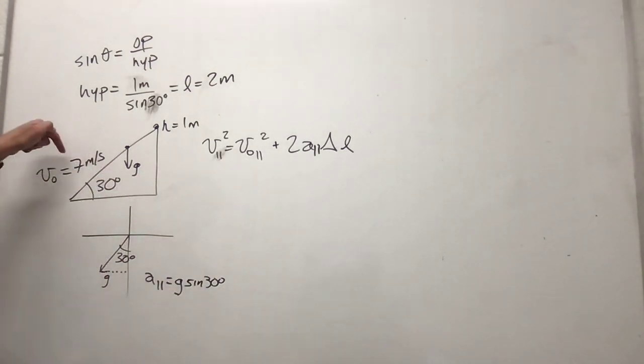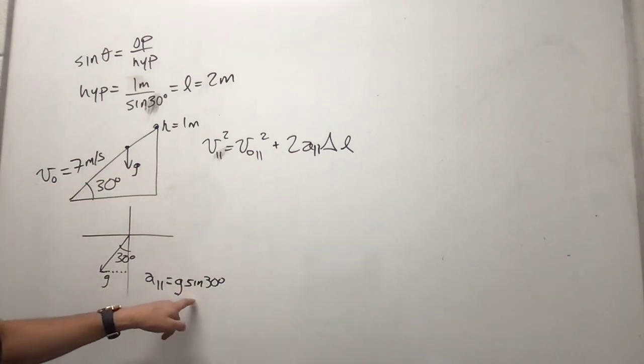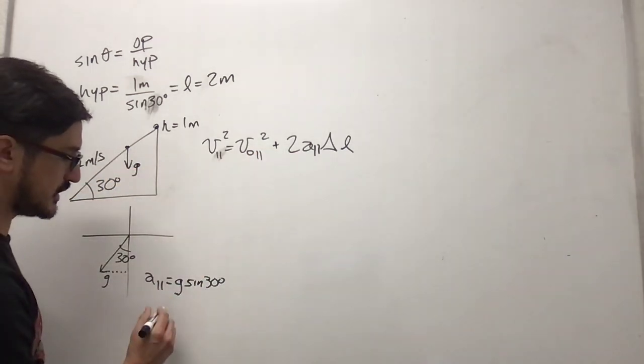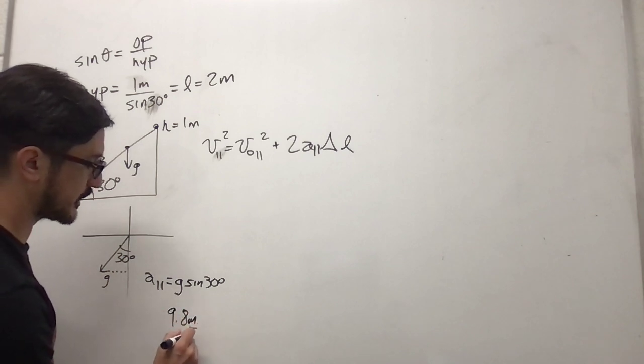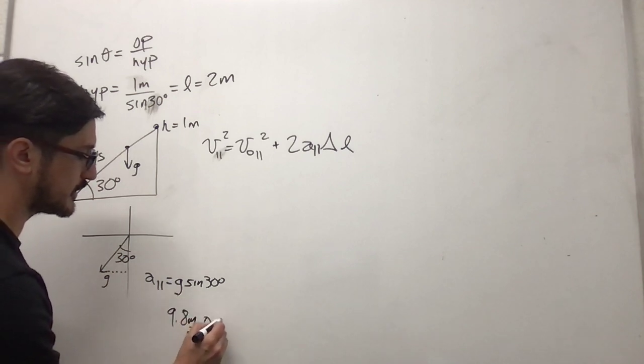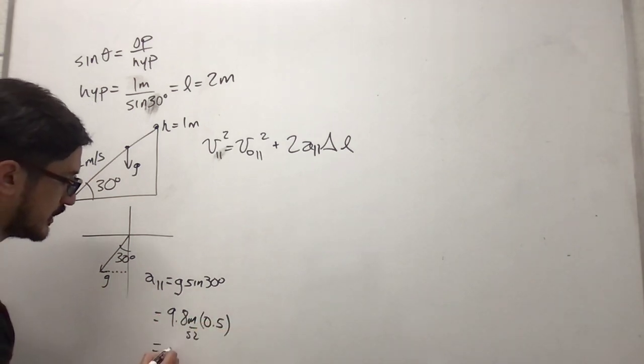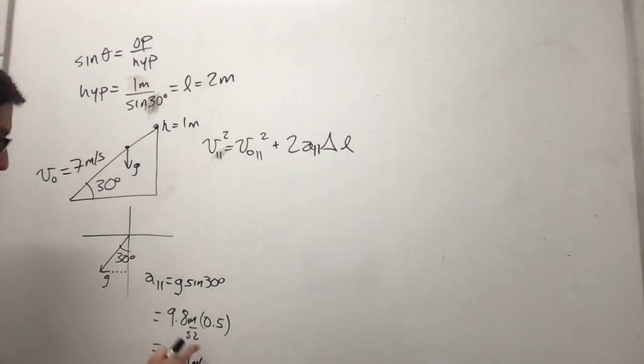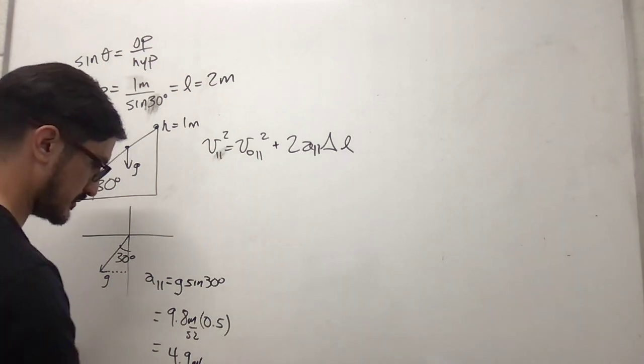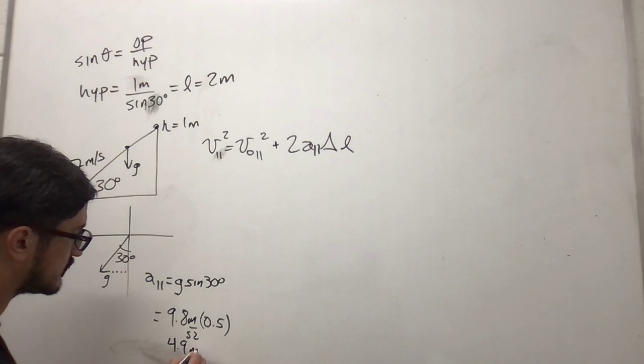We know the initial velocity is 7 meters per second. The acceleration parallel is g sine 30 degrees. g is 9.8 meters per second squared. The sine of 30 is 0.5. So the acceleration parallel is 4.9 meters per second squared.